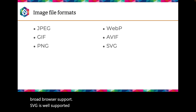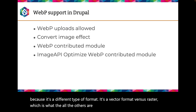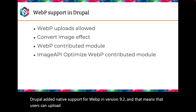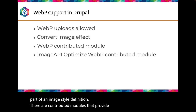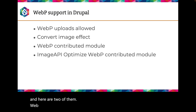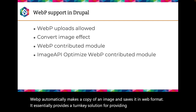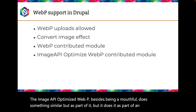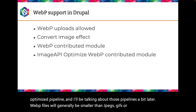SVG is well-supported by browsers but needs to be handled differently because it's a vector format versus raster, which is what all the others are. Drupal added native support for WebP in version 9.2, meaning users can upload WebP images and convert images to WebP as part of an image style definition. There are contributed modules that provide additional WebP support. The WebP module automatically makes a copy of an image and saves it in WebP format — essentially a turnkey solution for providing WebP versions of all uploaded images. WebP files will generally be smaller than JPEGs, GIFs, or PNGs, so I recommend rendering WebP images whenever possible.